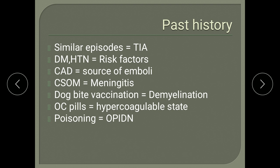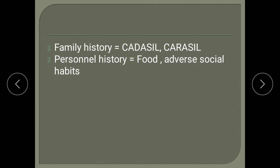Ask about ear discharge to rule out CSOM-related meningitis. Ask about history of dog bite vaccination, which can cause demyelination due to neural vaccines. Ask about OCP intake in females to rule out a hypercoagulable state. Ask about OPC poisoning, which can present with OPC-induced delayed polyneuropathy. Family history — very rarely you can get CADASIL (cerebral autosomal dominant arteriopathy with subcortical infarcts and leukoencephalopathy) and CARASIL. Personal history — ask about dietary pattern and adverse social habits like alcohol and smoking.